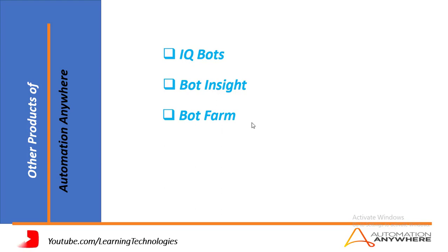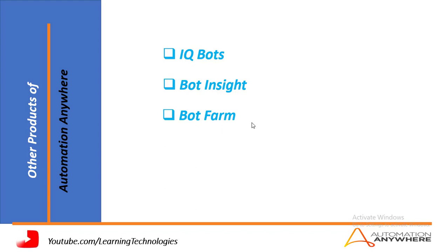IQ Bots are cognitive bots that think like a human and have features such as self-learning ability, algorithm-based decision making, and subject matter expertise. These bots extract data from semi-structured and unstructured data and use a semantic model to do so. Bot Insight is a tool used to analyze the performance of each and every bot. With this product, you can see the statistics and graphs of your business.